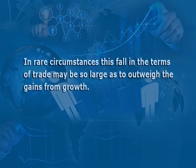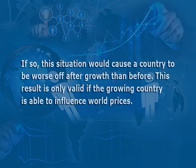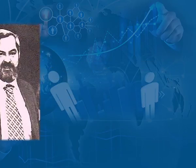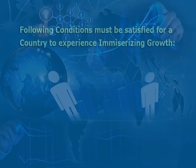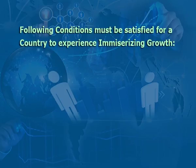In rare circumstances, this fall in the terms of trade may be so large as to outweigh the gains from growth. If so, this situation would cause a country to be worse off after growth than before. This result is only valid if the growing country is able to influence world prices. Another economist, Harry G. Johnson, had independently worked out conditions for this result in 1955.